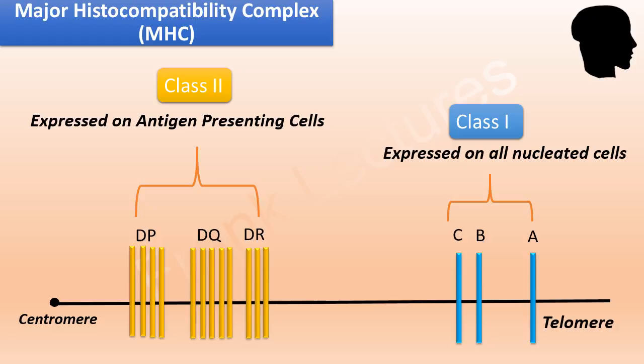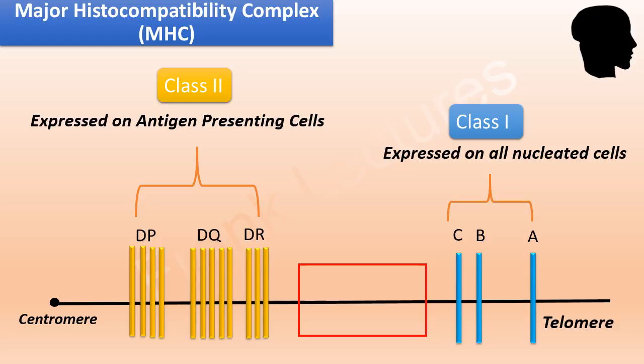The area between the class 1 and class 2 regions on chromosome 6 contains the class 3 genes. These genes code for complement proteins and cytokines which take part in the immune response, but these molecules are not expressed on the cell surface.